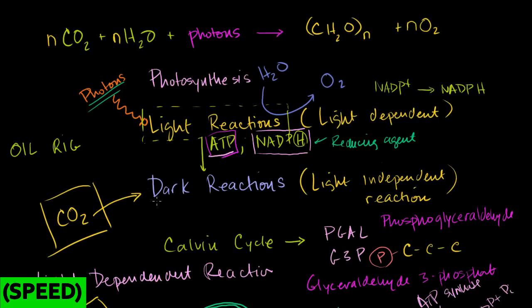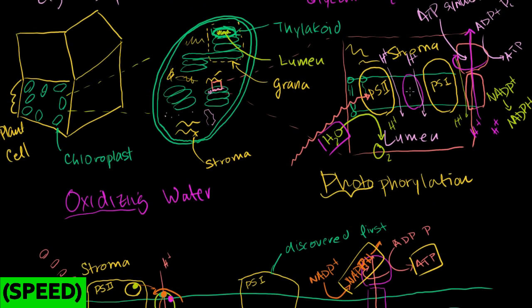I think we're now ready to learn a little bit about the dark reactions, but just to remember where we are in this whole scheme of photosynthesis, photons came in and excited electrons in chlorophyll in the light reactions, and as those photons went to lower and lower energy states.